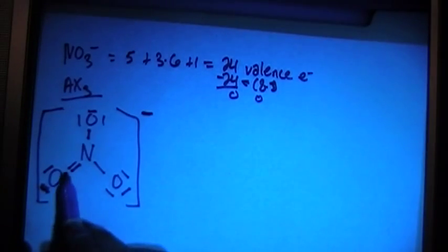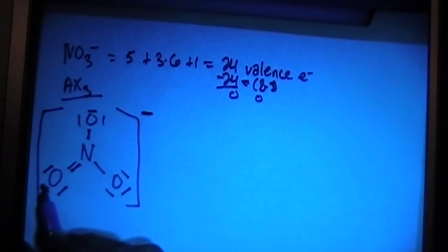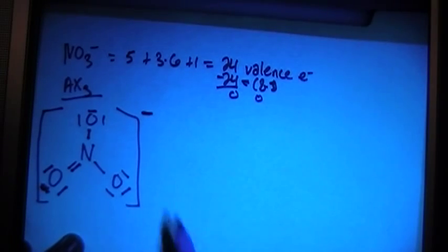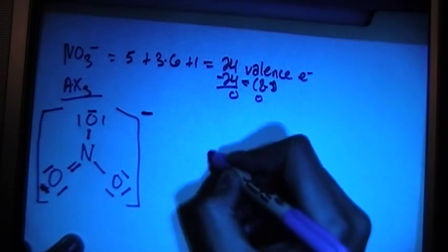So there's actually going to be two more. If you notice, there's three oxygens. So we could have taken any pair of electrons from any oxygen. There's going to be three resonance structures. So let's go ahead and draw those.